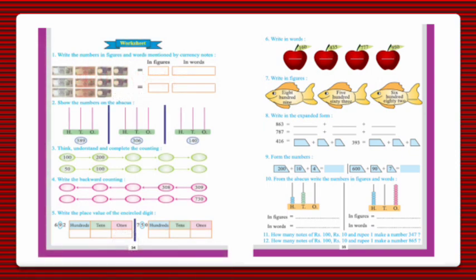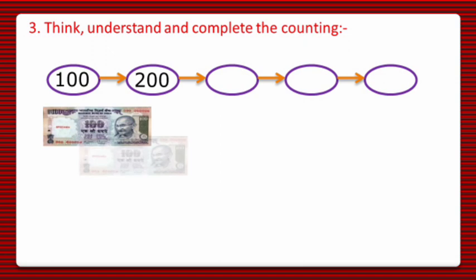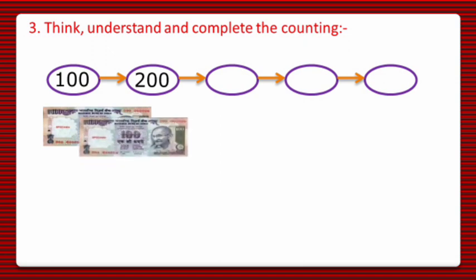So we have reached question number 3, and that is think, understand and complete the counting. So dear students, we will take the currency notes of 100 for this. For 100 rupee note, the value becomes 100, and if 200 rupee notes are there, then the value will become 200 for 2 notes.